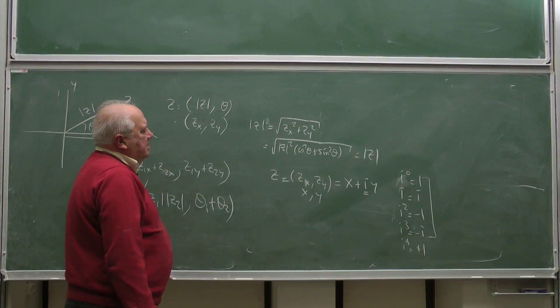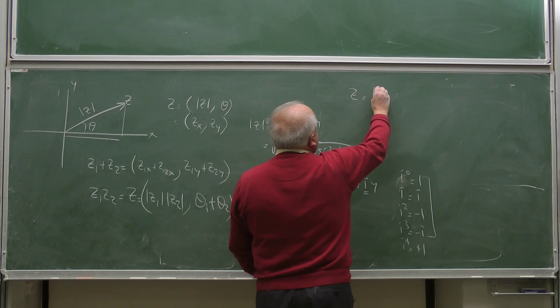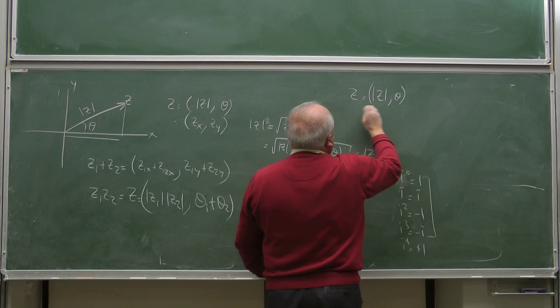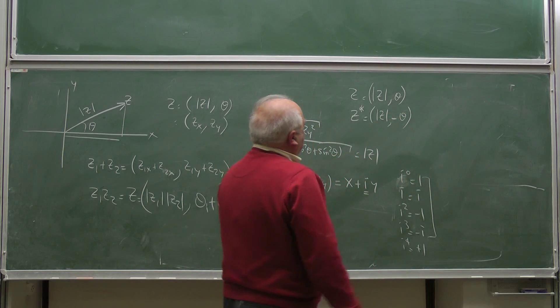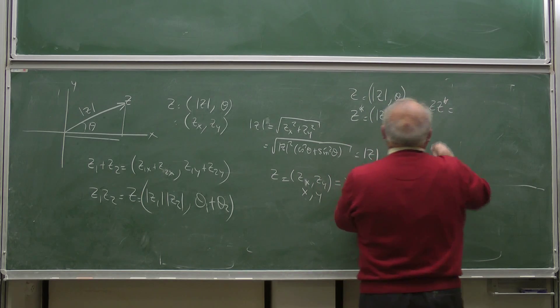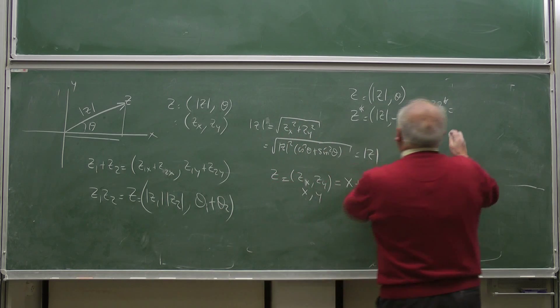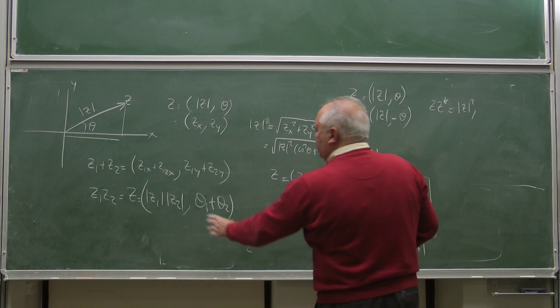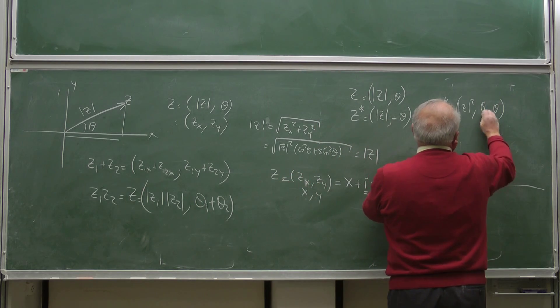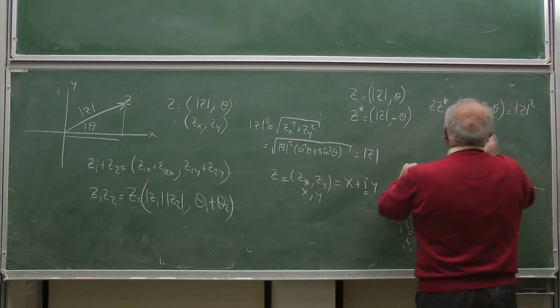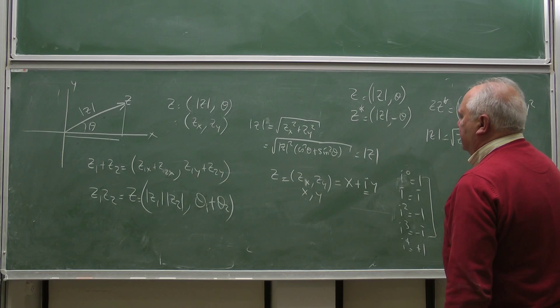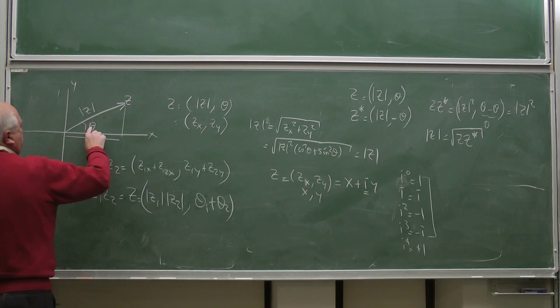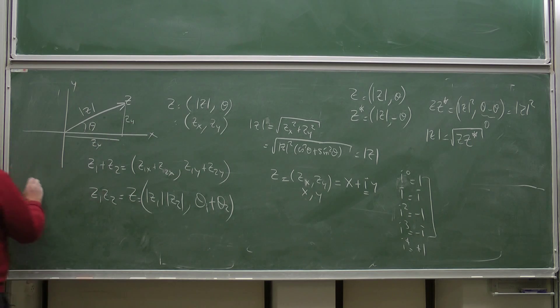We define a complex conjugate. So if z is in the polar representation z and theta, then the complex conjugate is z and minus theta. So you see z times z star is multiply the magnitudes, that's z squared, and add the angles theta minus theta, which is 0, z squared. So we can say that z is the square root of z and z star. And easily we can say that tangent theta is zy over zx, or y over x.